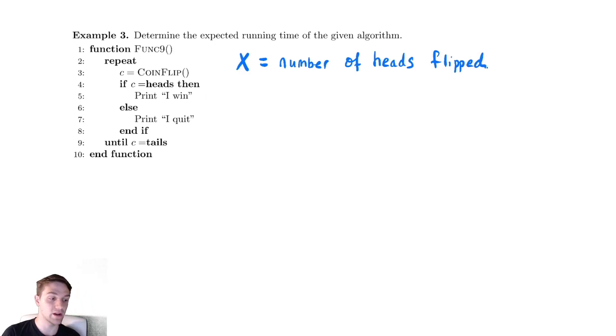And if we can understand the number of heads that we flip, we will be able to understand what's happening here. If we flipped four heads, we would go through that loop five times. Why five times? Because we always go through the loop at least once. Because of the fact that we are doing a do while type structure and not a while type structure.